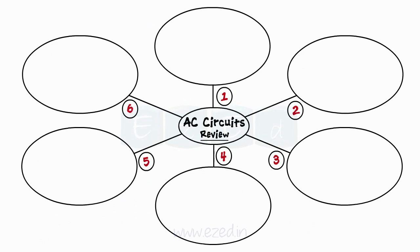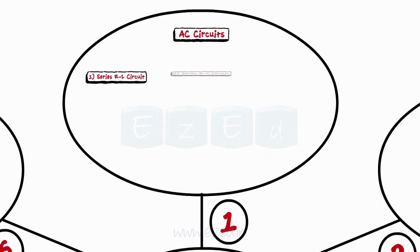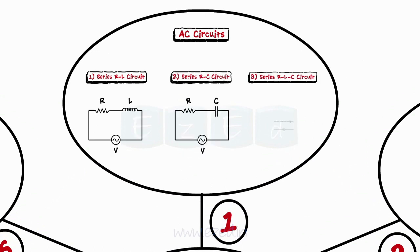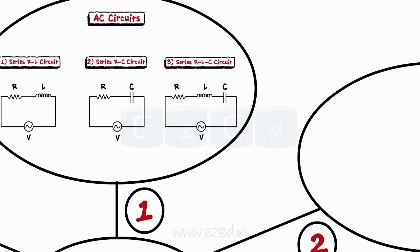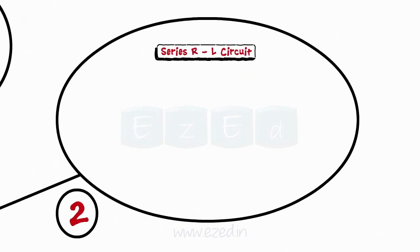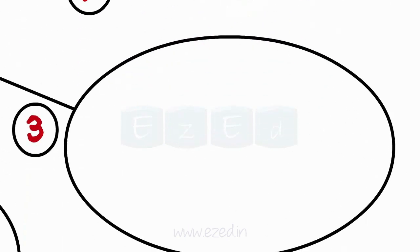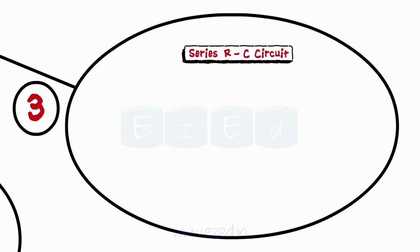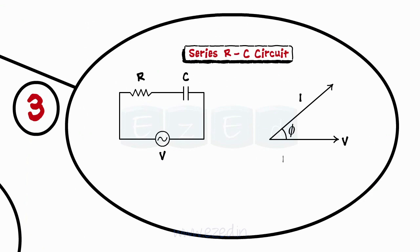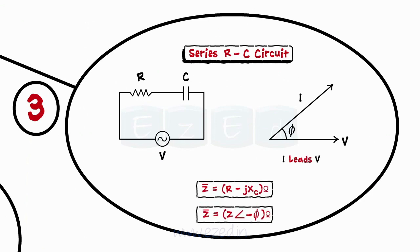Let's have a quick review of what we've learned. There are three types of fundamental AC circuits: series RL, series RC, and series RLC. In the series RL circuit, being inductive, the current lags behind the voltage by an angle phi, and Z equals R plus j·XL. In the series RC circuit, being capacitive, the current leads the voltage by an angle phi, and Z equals R minus j·XC.